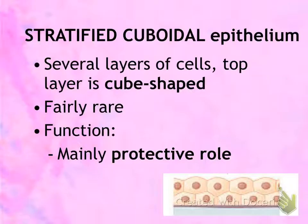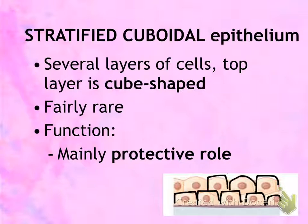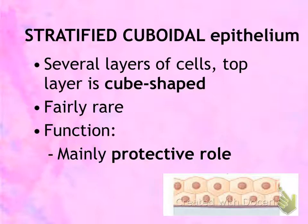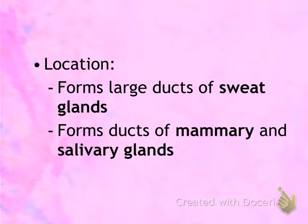Next is stratified cuboidal epithelium. There are multiple layers — notice two rows of cells, which is why it's called stratified. The cells are cube-shaped in appearance and the nuclei are round. Stratified cuboidal epithelium is rare in the human body, and its main role is protective. Locations include exocrine glands such as sweat glands, mammary glands, and salivary glands.